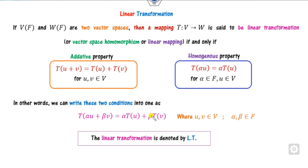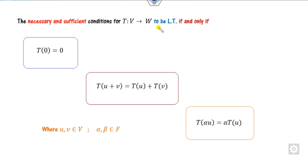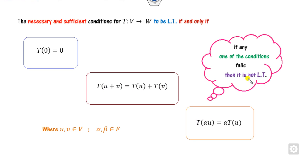This linear transformation is denoted by LAT as a standard notation. The necessary and sufficient condition for a linear transformation is that T of 0 equals 0. Make sure that if any of these properties is not satisfied, then it is not a linear transformation. U and V are from your vector space V, and alpha belongs to the field F.